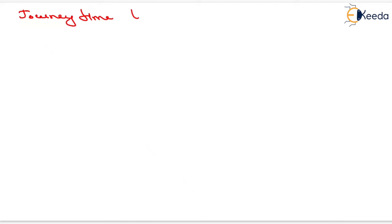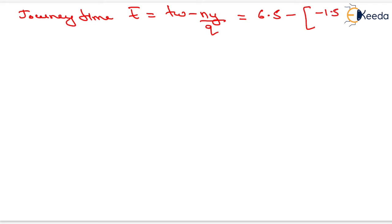Next, we determine the journey time. Journey time T-bar equals TW minus NY divided by Q. Substituting TW as 6.5, NY as minus 1.5, and Q as 12.58, the journey time T-bar comes out to 6.62 minutes.